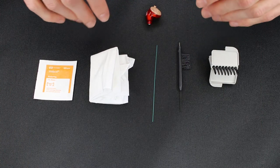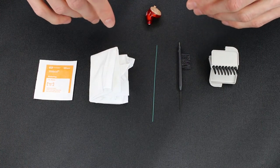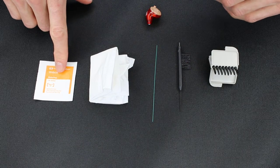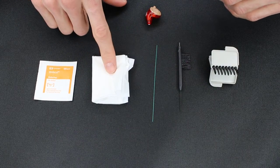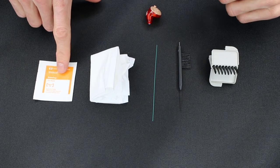When we're getting ready to clean a hearing aid, we need to make sure we have a few things. First is either an alcohol swab or a Kleenex. I prefer alcohol swab, but some people don't like to use them.